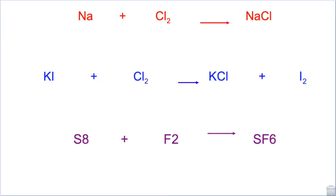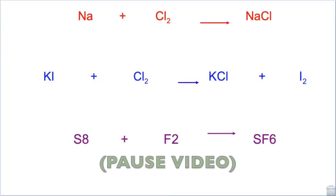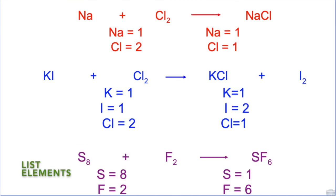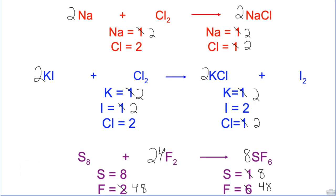Here are three examples for you to try. Pause the video and write the equation down on a piece of paper. You can then balance the equations and check your work. The answers will be provided at the end of the video. The first step is to list the elements, then add coefficients until everything is balanced out. Here are the answers — all these equations are now balanced.